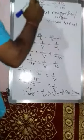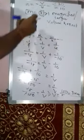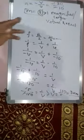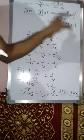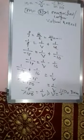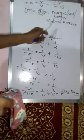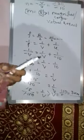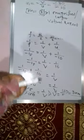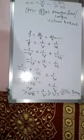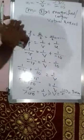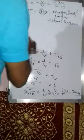Since the value is positive 3, it is a virtual and erect image. For negative magnification we write real and inverted; for positive magnification we write virtual and erect. In this way we find the image distance and magnification, and the nature is magnified, virtual and erect.